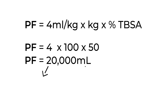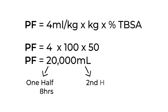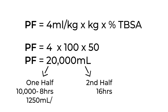This total is broken up into two halves. The first half — 10,000 mLs — is given in the first 8 hours at a rate of 1,250 mLs per hour. The second half of 10,000 mLs is given in the following 16 hours at a rate of 625 mLs per hour. That's essentially the Parkland formula.